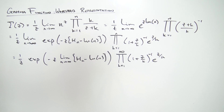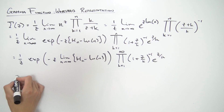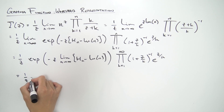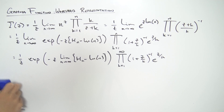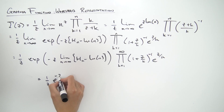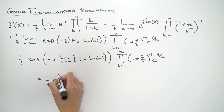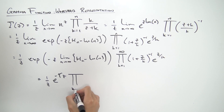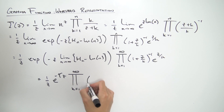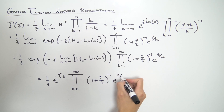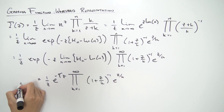That limit is exactly the Euler-Mascheroni constant. So now we have 1 over z times e to the minus gamma·z — where gamma is the Euler-Mascheroni constant — multiplied by the infinite product from k equals 1 to infinity of (1 plus z over k) to the minus one times e to the z over k. And this is the Weierstrass representation for the gamma function.